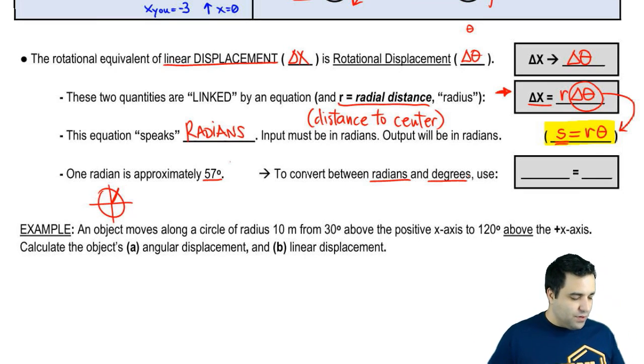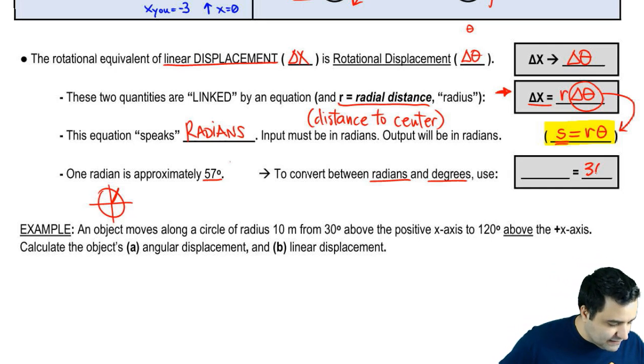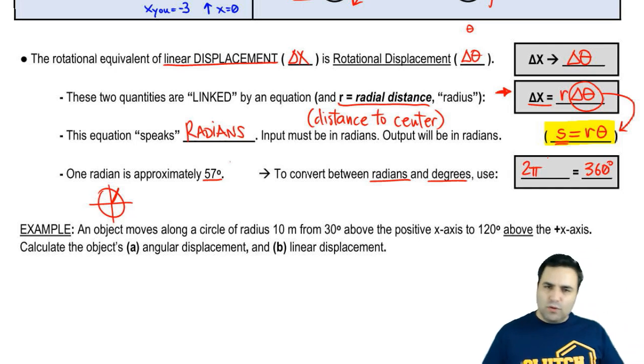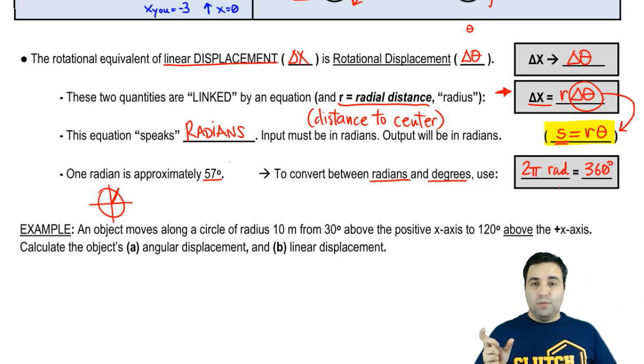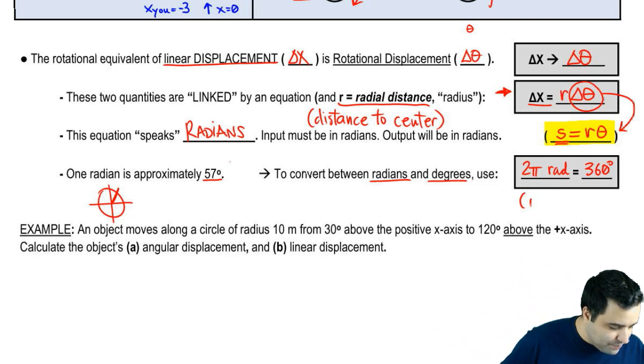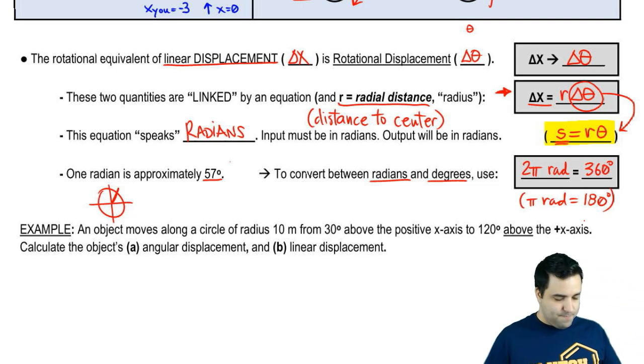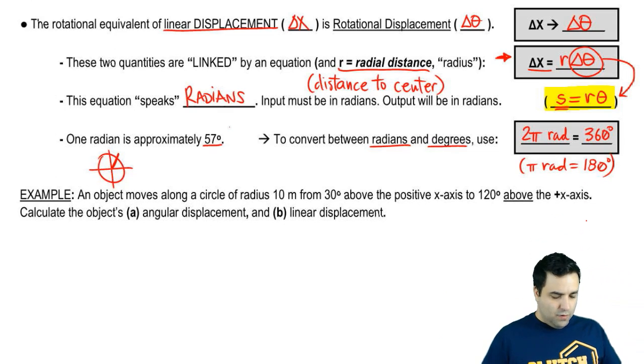And to convert between radians and degrees, you just have to remember that 360 degrees equals 2 pi. Now, most people remember that. What a lot of people don't realize is that the unit for pi is radians. That's why this conversion works. So pi is 3.1415 radians. Another way you can do this is just by saying pi radians equals 180 degrees. Cool.